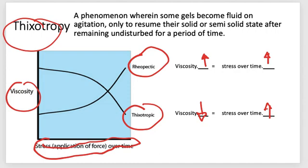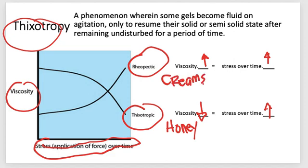Rheopectic liquids increase in viscosity as stress over time increases. Examples of thixotropic gels include honey — you basically need to keep stirring your honey and then it becomes liquid. For rheopectic behavior, an example is creams — the longer you whip it, the thicker it gets.